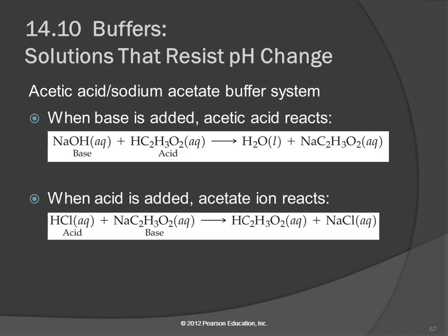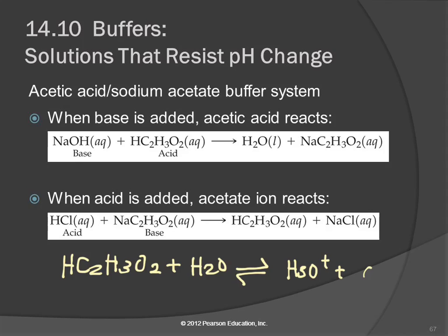HC2H3O2 in water — it's a weak acid, it's in equilibrium. The weak acid donates a proton to the water and becomes acetate. So this is the conjugate base, and this is the weak acid. You have to have a weak acid and its conjugate base in order for it to be a buffer. The water is acting as the base, and the hydronium ion is the conjugate acid. But the one we're interested in is the acetic acid and the sodium acetate.